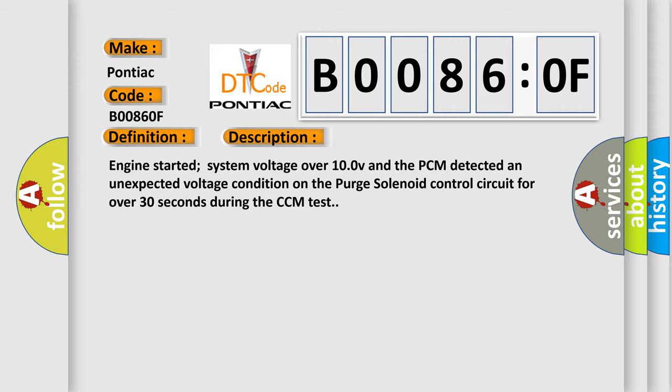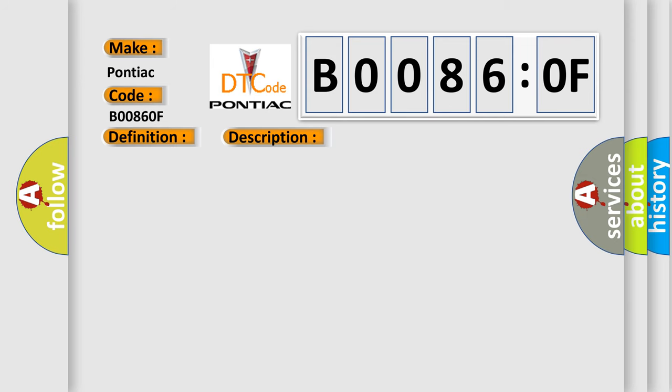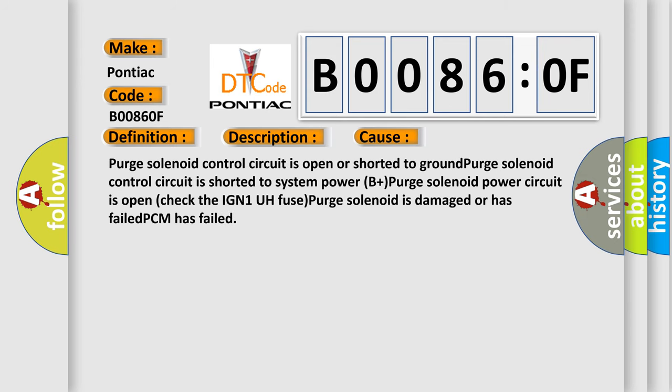This diagnostic error occurs most often in these cases: Purge solenoid control circuit is open or shorted to ground, purge solenoid control circuit is shorted to system power, B plus purge solenoid power circuit is open, check the IGN-1R fuse, purge solenoid is damaged or has failed, or PCM has failed.